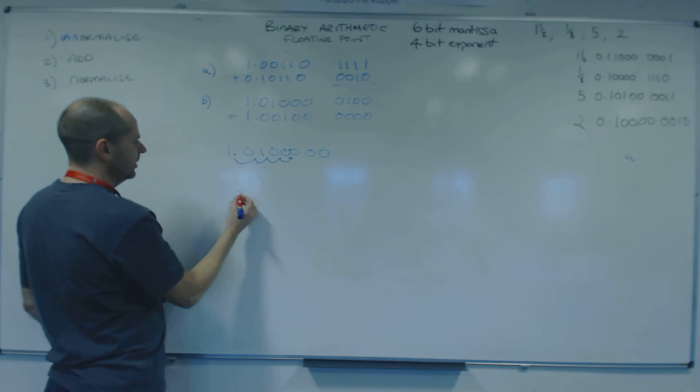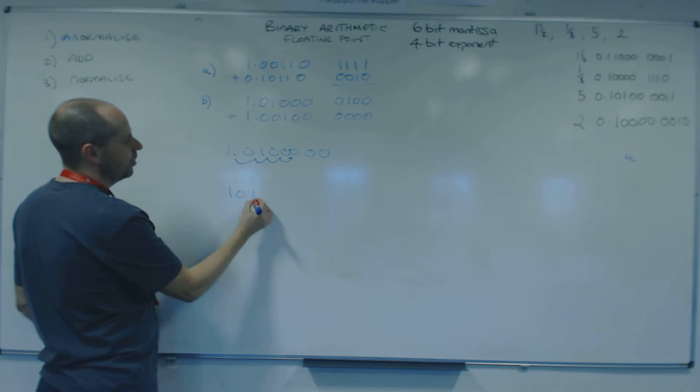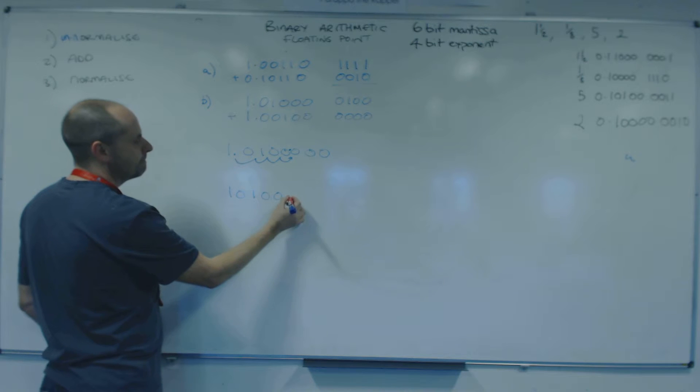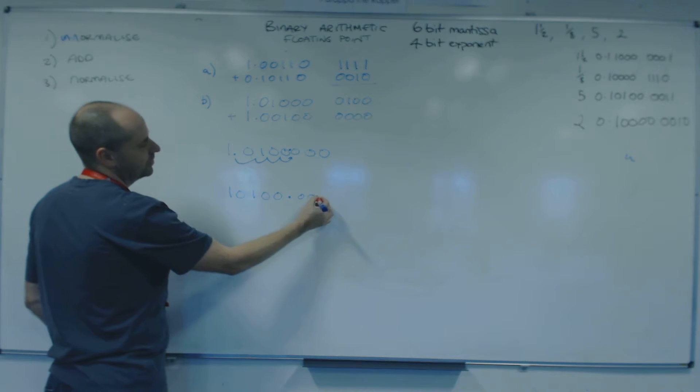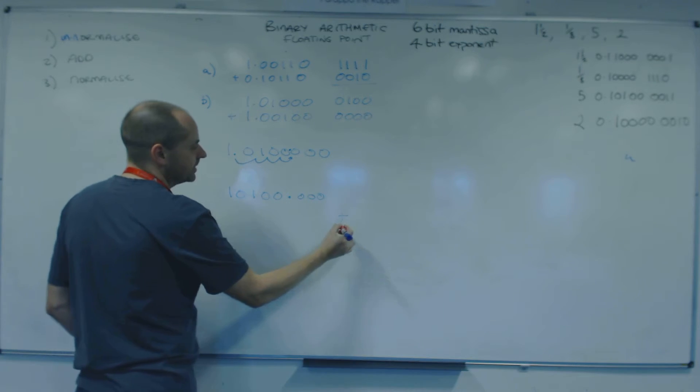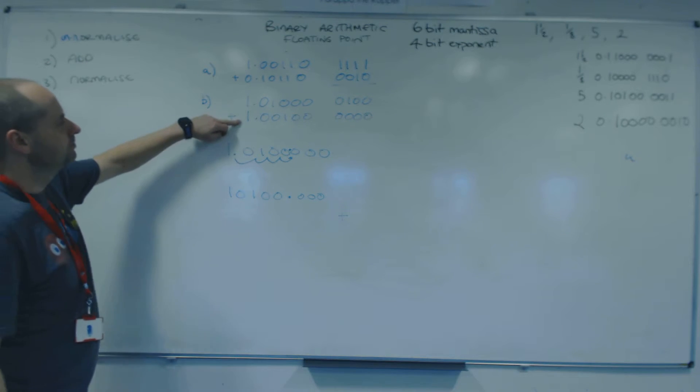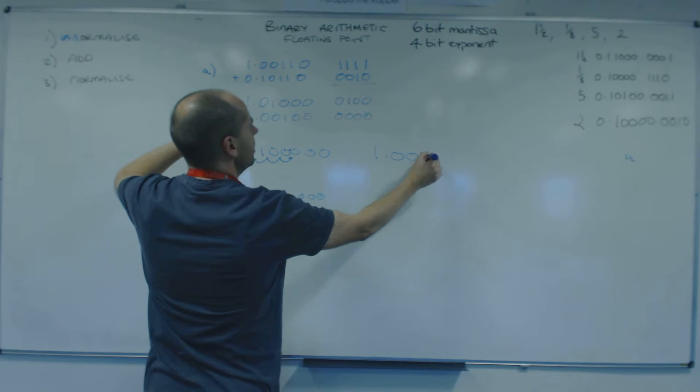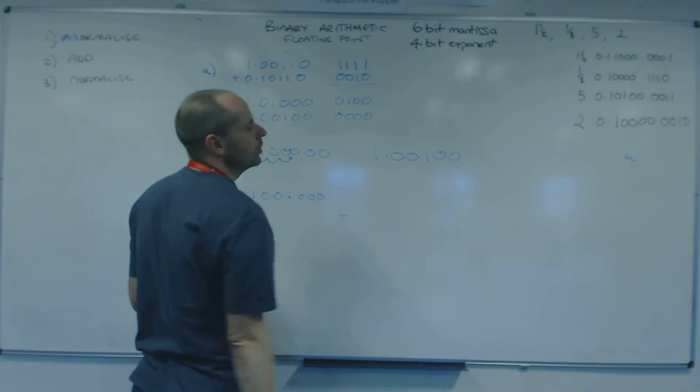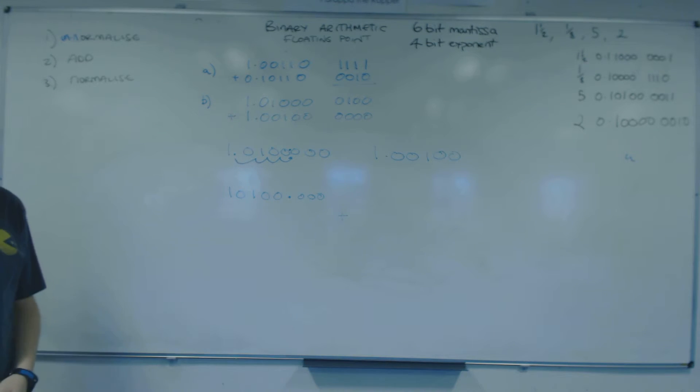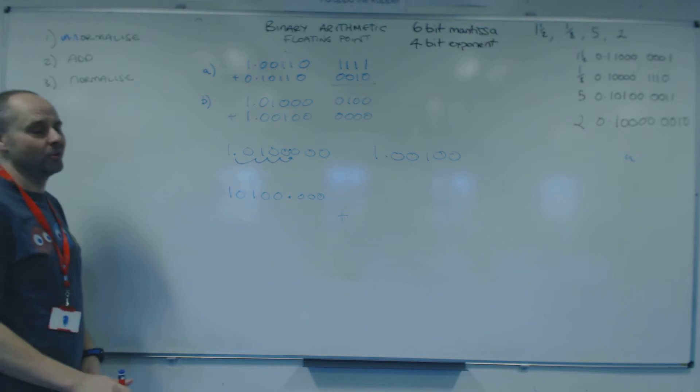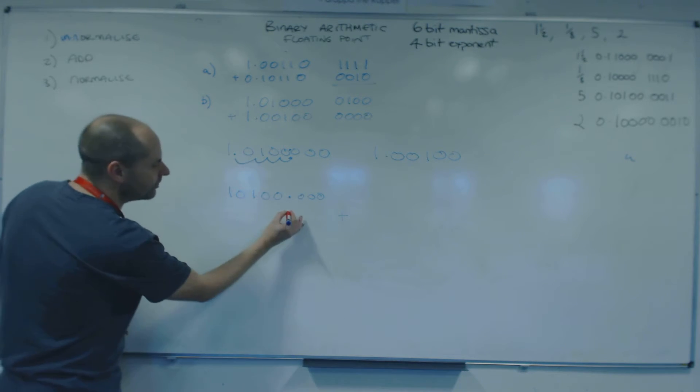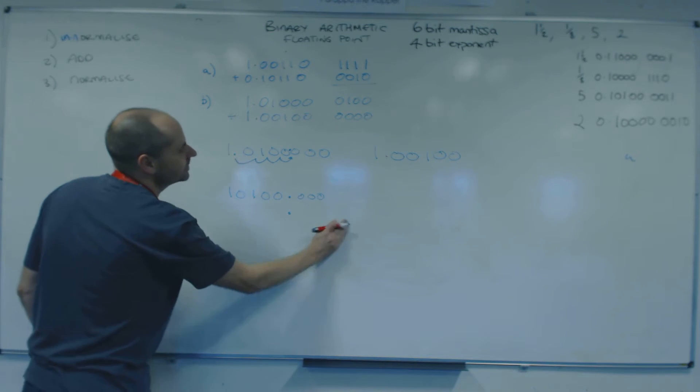So my number that I'm going to add up is 1, 0, 1, 0, 0 point and then we've got three zeros currently. The next number was 1.00100. Looking at the exponent, do we need to unnormalise it? No, there is no movement to do. That was quite nice. So I'll write that one down, but I've got to write it down properly.